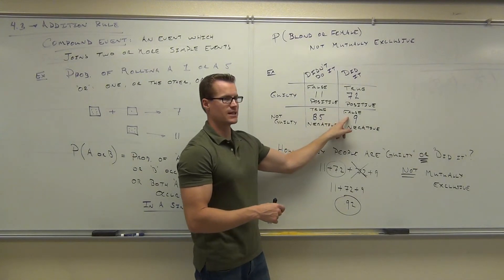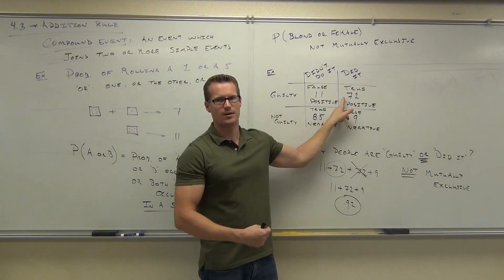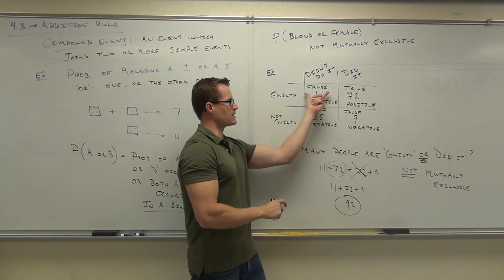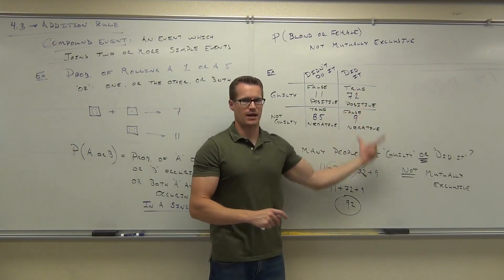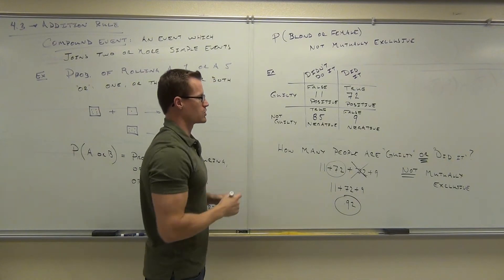So what I'm asking is either you're guilty or you did it or you might be both. So when we look at this and go, okay, these people are definitely guilty, they have to be on my numbers. These people definitely did it, they have to be on my numbers. These people have me both, guilty and did. That's like a double whammy. They're in both spots at the same time. We have to have those people. That's how we're getting the 11 and the 9 and the 72.